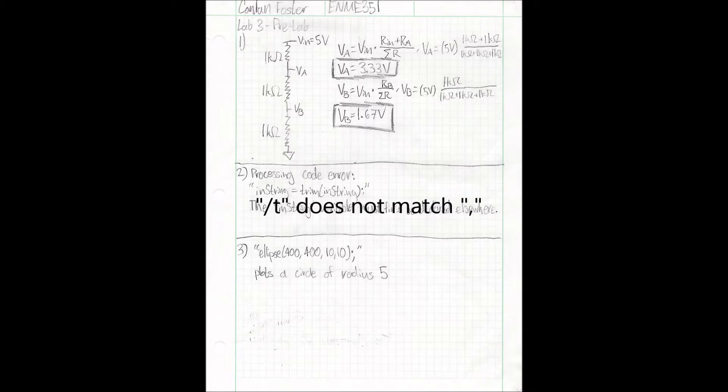For the second part, in the Arduino code, the string xy string line shows that the two parts of the strings are separated using a comma, whereas in the processing code, under the split tokens function, it is referred to as a tab. This discrepancy will cause the code to not be read correctly.